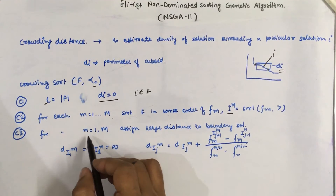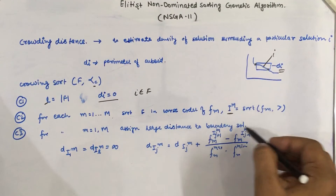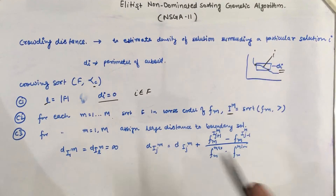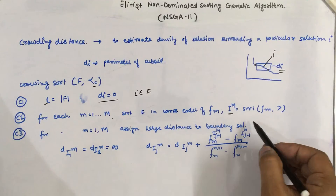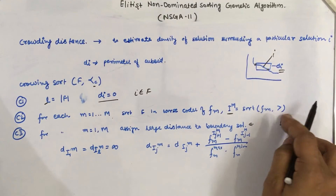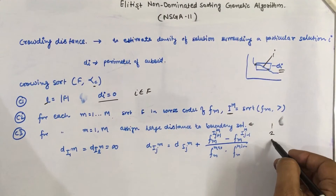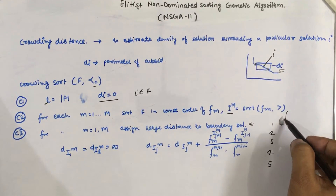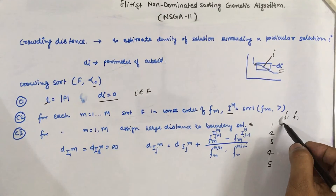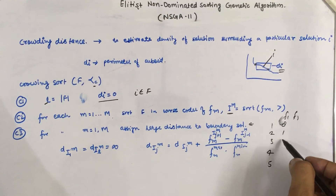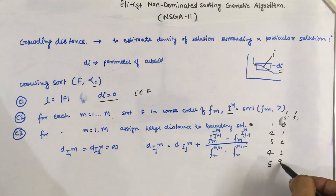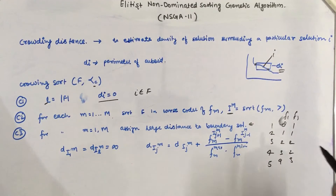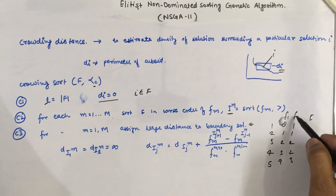Once the index vector is calculated, we assign the largest distance to boundary solutions. Suppose we have five solutions with fitness values for F1: 8, 1, 2, 3, 9, and fitness values for F2: 1, 1, 2, 2, 3.